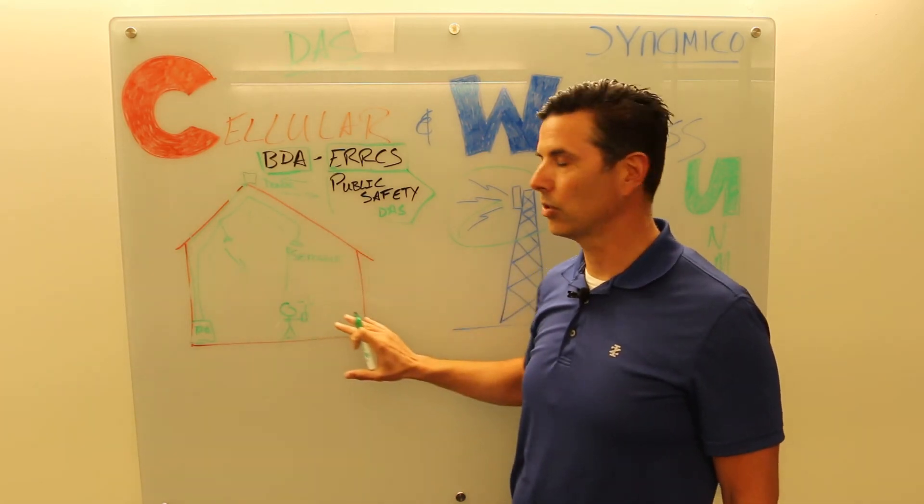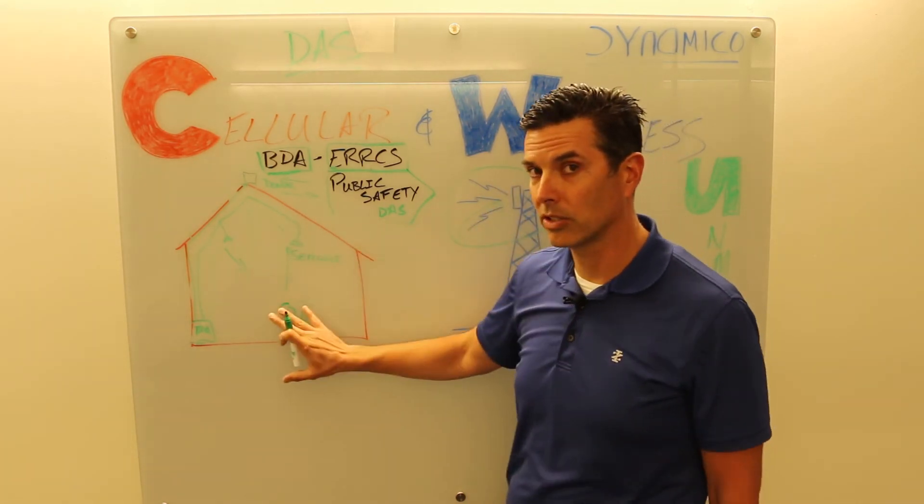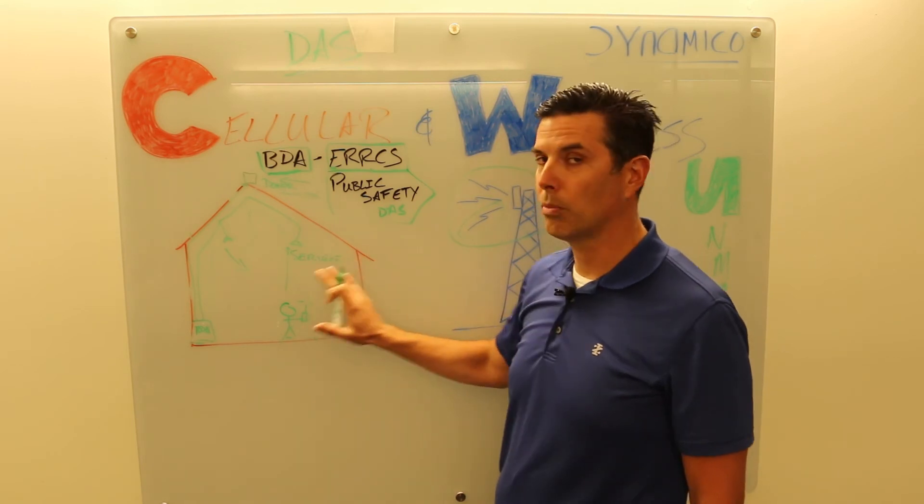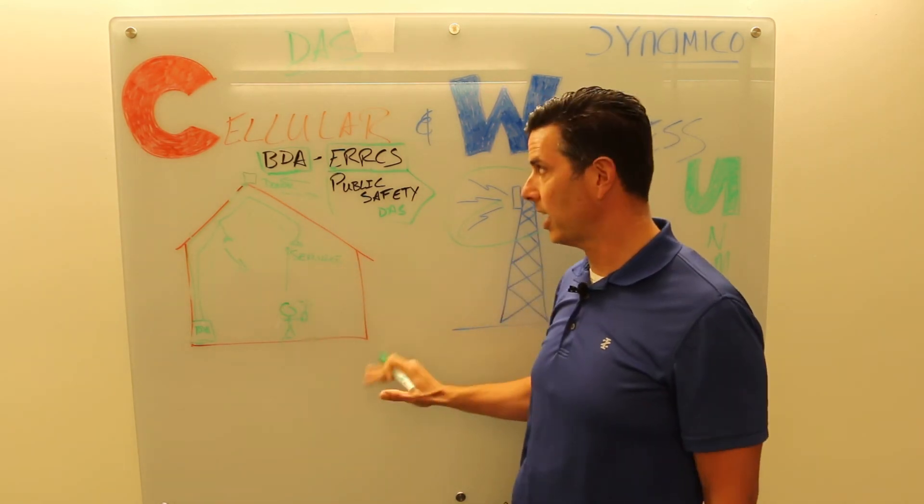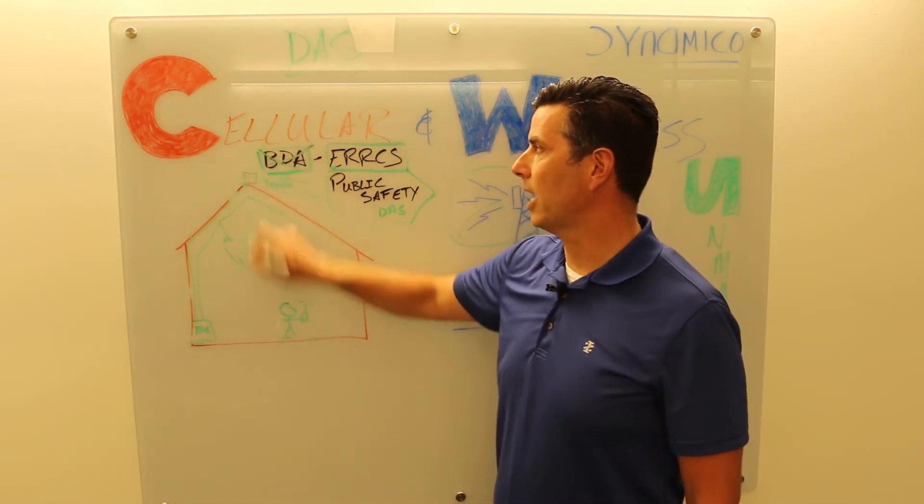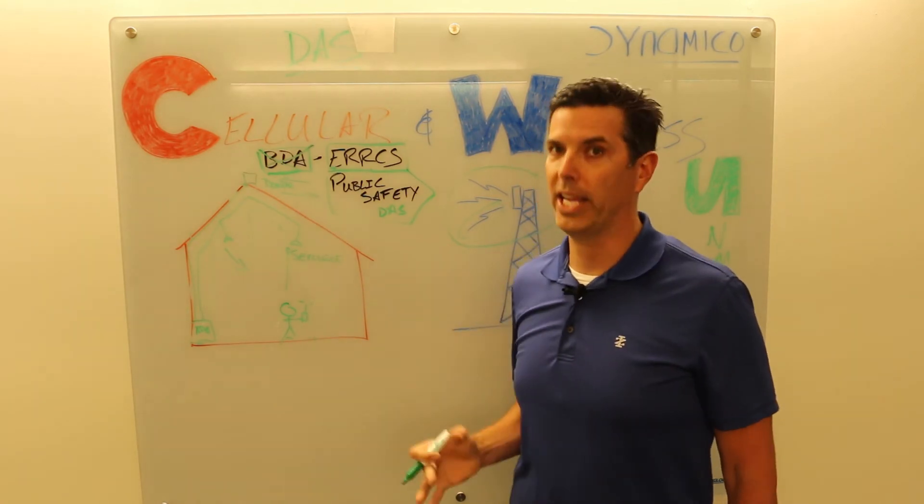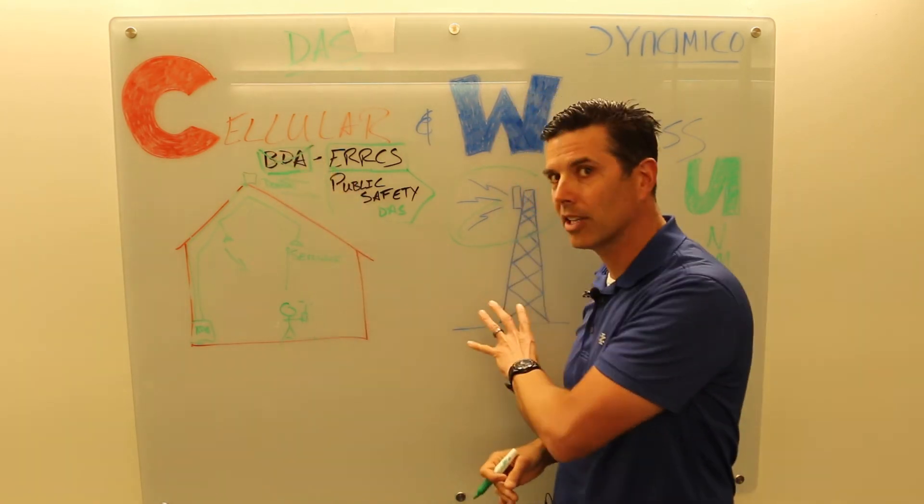So they have approval to use these signals. Now when you use a BDA you're repeating licensed signals, so you're repeating the carrier signals. If they don't want you to repeat that, they have full authority to say turn off that BDA, you're causing us problems, we don't want it. So if you're using a BDA for cellular, work with the carriers.